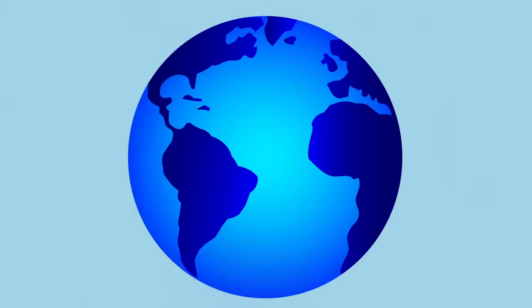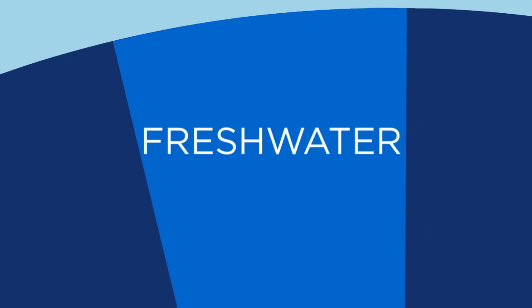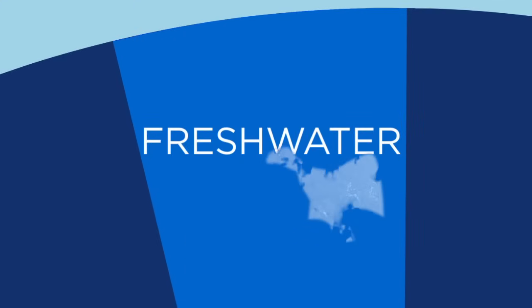So just how does the usable water break down for us? A giant 97% of Earth's water is in the ocean, so we can't use that. 3% is freshwater, but even in that small sliver...